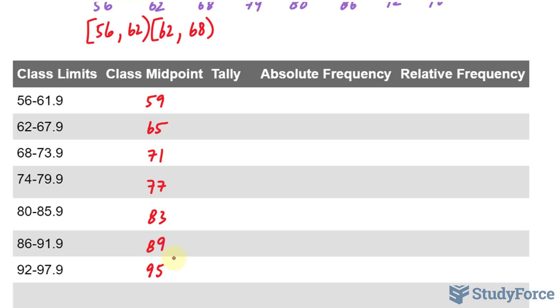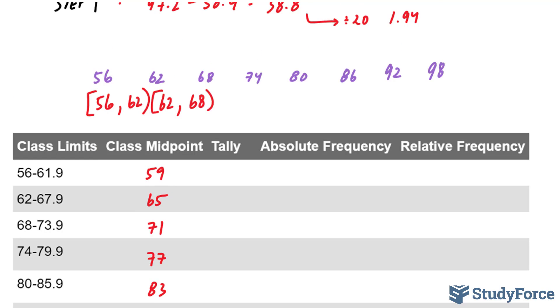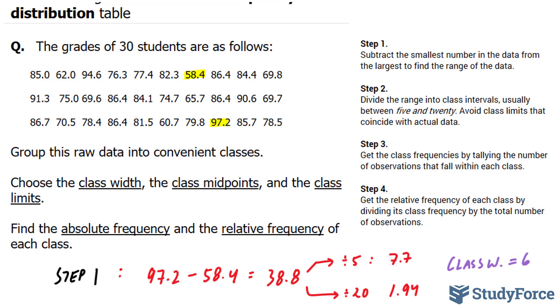Now we have to tally up the results. I'll show you the first three, and then I'll fill in the rest automatically. So between 56 and 61.9, let's find out how many observations there are. There's one, this one doesn't count because it's at 62, and we have this one. So that makes two.